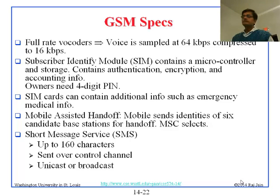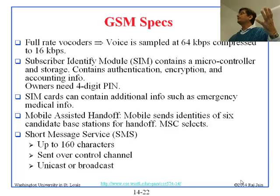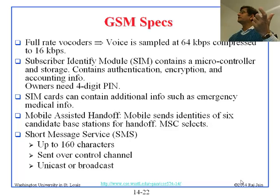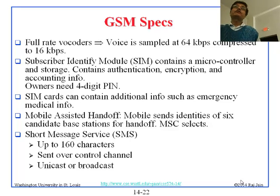GSM voice coding is done at 64 kilobits. Voice is sampled at 8 kilohertz and 8 bits per sample, which gives you 64 kilobits per second. We compress that to 16 kilobits per second for GSM. So GSM already starts from compression — if you take a normal wired phone, the voice goes at 64 kilobits uncompressed, but on GSM we start with 16.